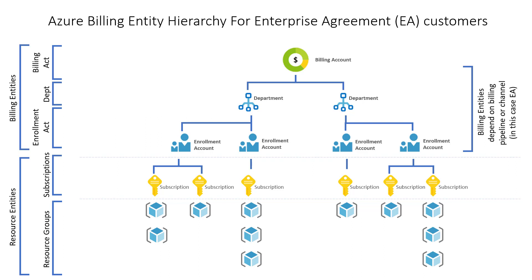In this context, entities can either be billing entities or resource entities. Let's first look at billing entities. Billing entities are different depending on how you purchase Azure. For example, there are different billing entities for each of Enterprise Agreements or EAs, Microsoft Customer Agreements or MCAs, Pay As You Go or PAYG, and for customers of cloud solution providers or CSPs.